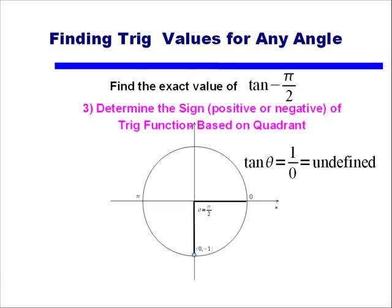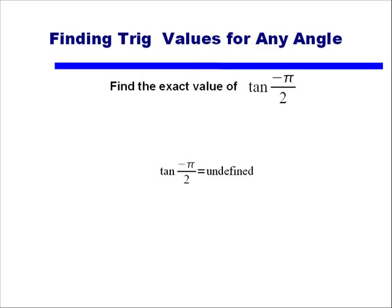That third step — determining the sign, whether the function is positive or negative — doesn't matter here, because if tangent is undefined, we don't have negative undefined, we just call it undefined. So the value of tangent of negative π/2 is undefined.